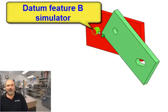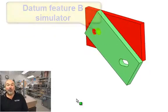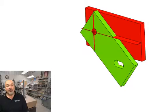The standard calls this the related actual mating envelope. Once that is done, the only thing the part can do is spin around the axis of the datum feature B simulator.